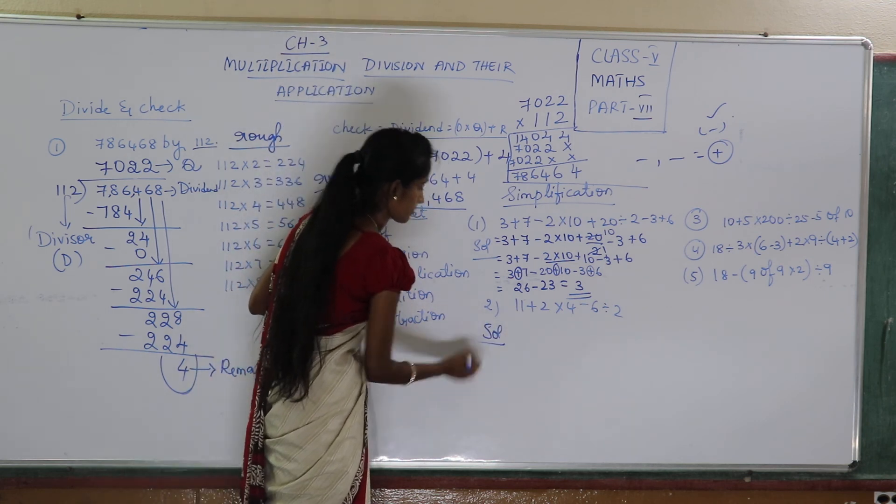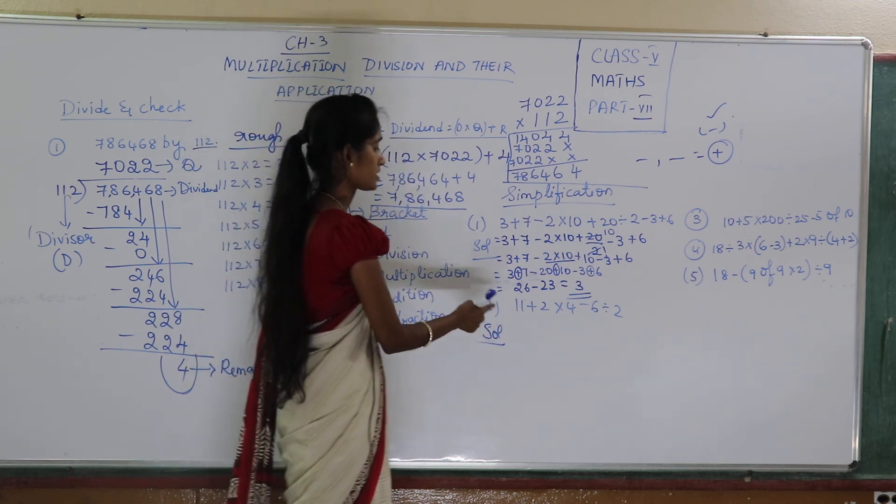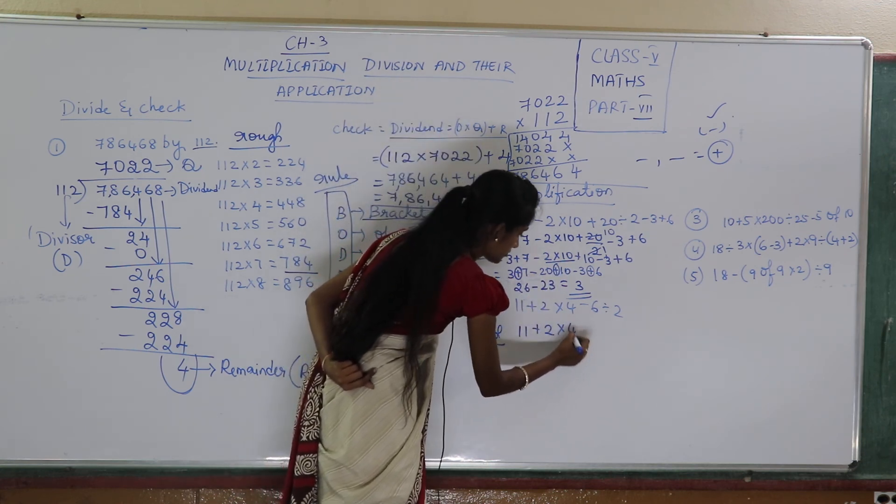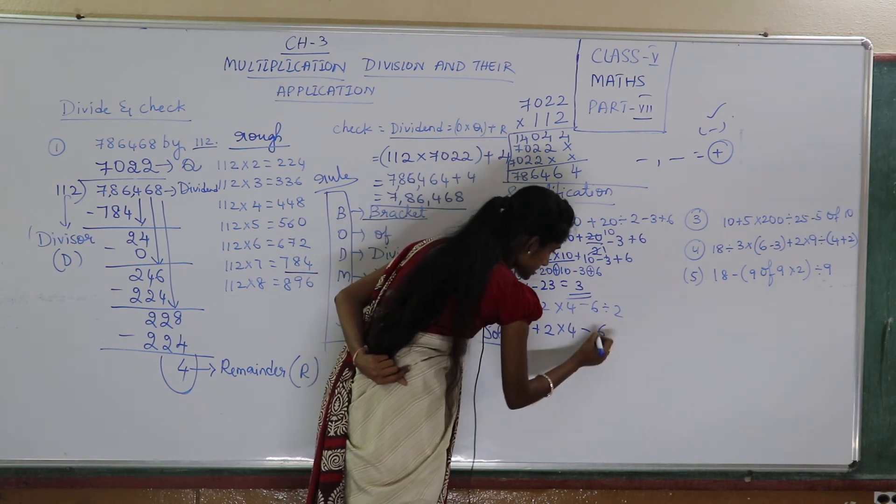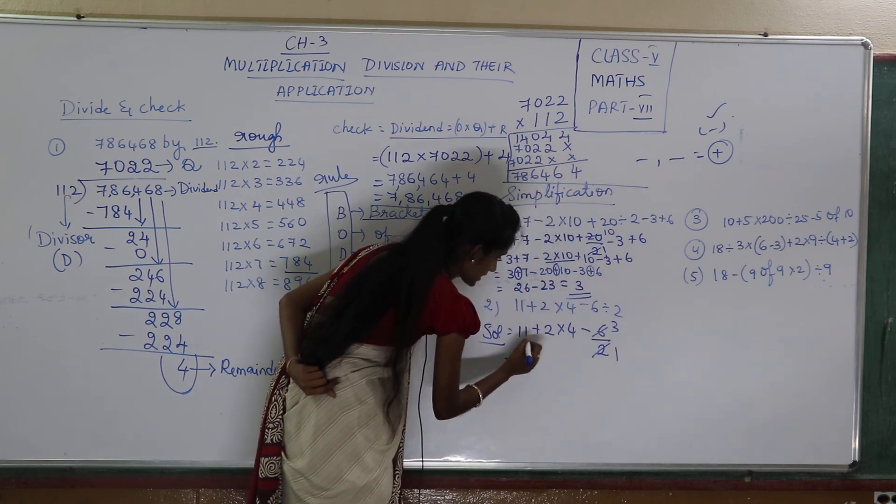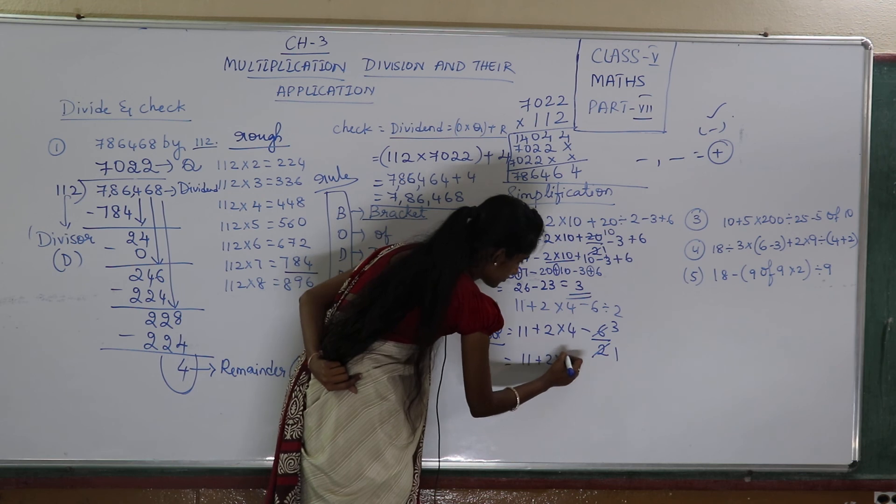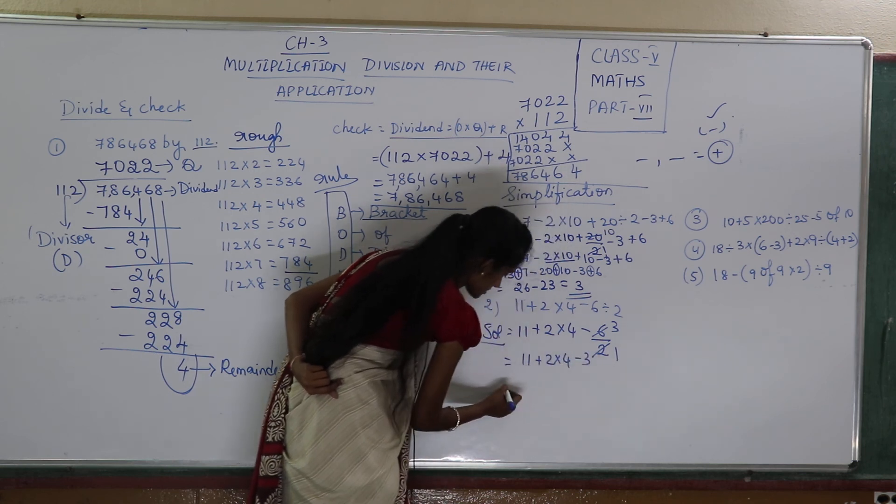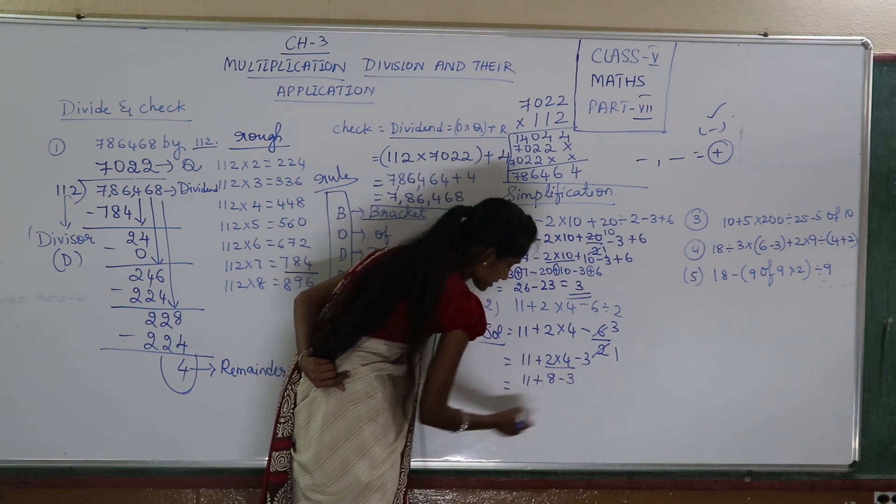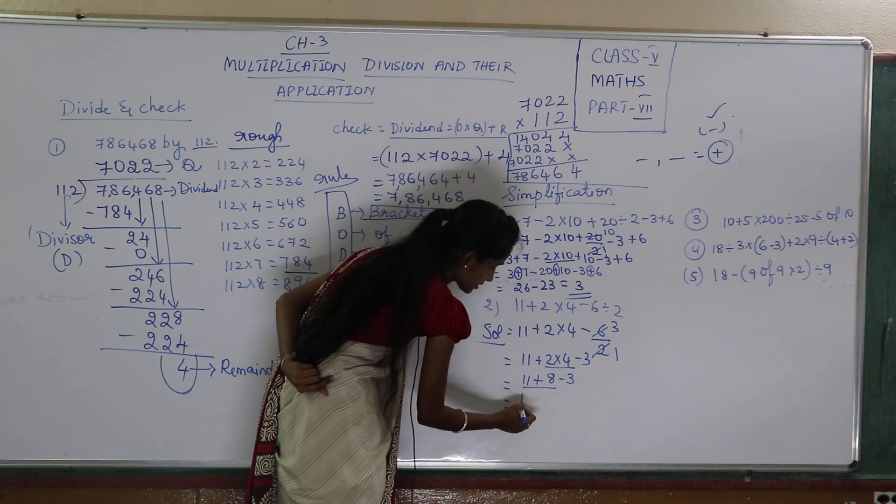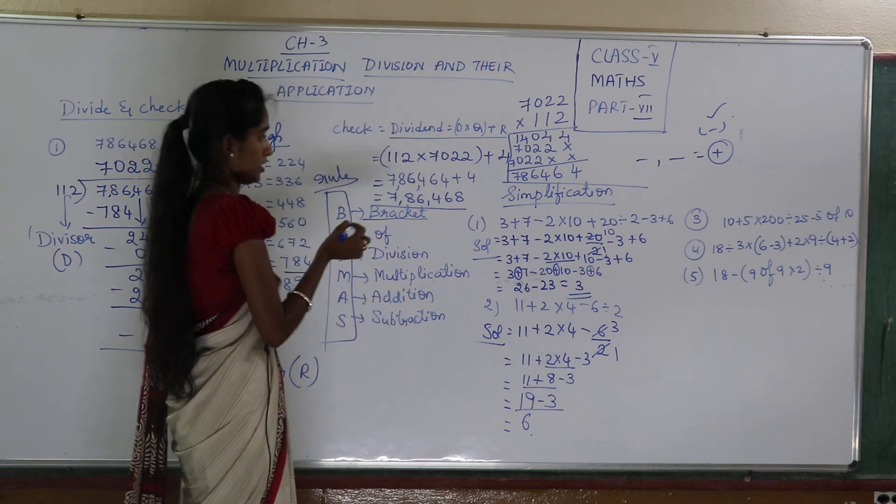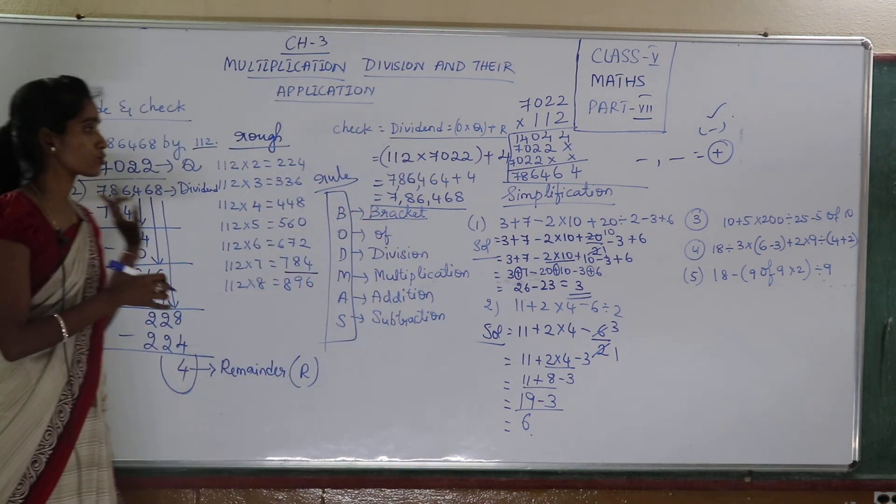Now coming to the next problem. See this problem. I have 11 plus 2 into 6 minus 6 divided by 2. Now 11 plus 2 into 4 minus 6 divided by 2. 2 ones are 1, 2 threes are 3. Now see this. 11 plus 2 into 4 minus 3. Now I am going to do multiplication. So this is my multiplication. 11 plus 8 minus 3. Now addition. This is my addition. 19 minus 3. This is my subtraction. It is 16. So if you follow the steps, it is very easy to do the sum.